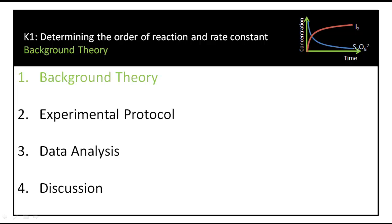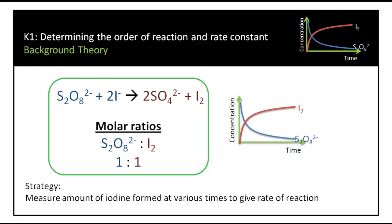Persulfate and iodide react to form iodine. If we look at the graph on the right-hand side, you can see that as the reaction proceeds, the concentration of persulfate — the blue line — decreases over time. Also as the reaction proceeds, the concentration of iodine increases over time, because as more time goes on, the more iodine will be formed.